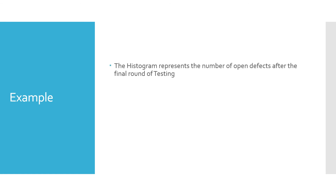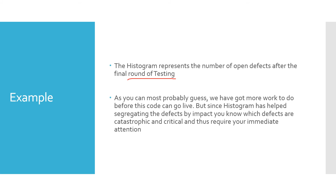The histogram represents the number of open defects after the final round of testing — 19 defects in total. As you can probably guess, more work is needed before this code can go live. Since the histogram has segregated defects by impact, you can see which are catastrophic and critical. There were four such defects — one catastrophic and three critical — which require your immediate attention.